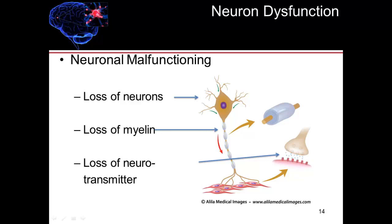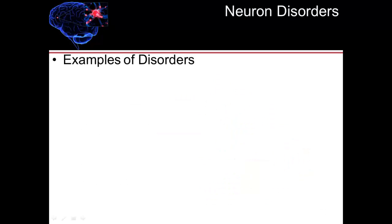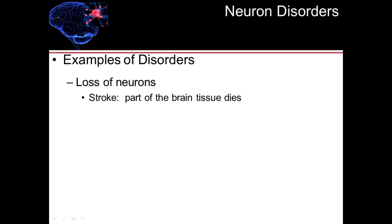How can neurons dysfunction, resulting in problems with brain function? You can have a loss of neurons — meaning they die off either spontaneously or through a severe or moderate brain injury. You can also have neuronal malfunction through a loss of myelin. If you lose that myelin sheath on the axon, then the transmission of action potentials is not as quick as it should be. You can also have neuronal malfunctioning based on a loss of neurotransmitters, so a neuron cannot communicate correctly with the next neuron. For example, a stroke results in death of part of the brain tissue.